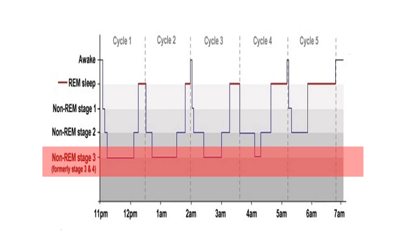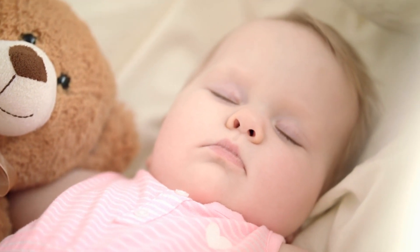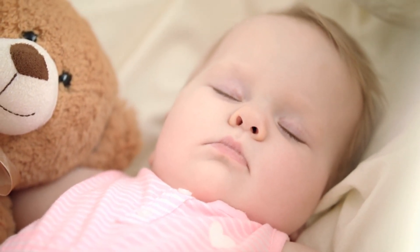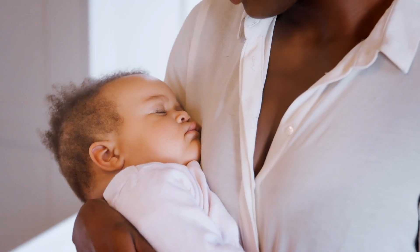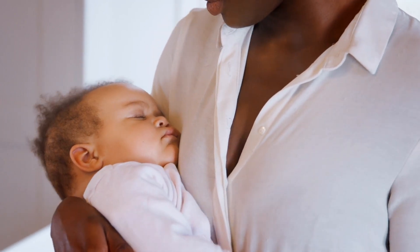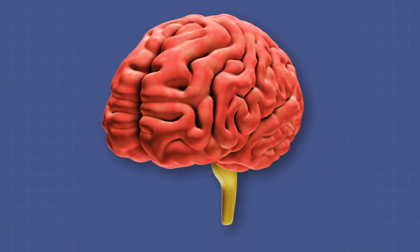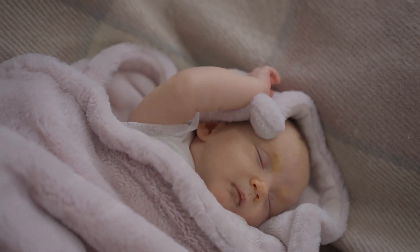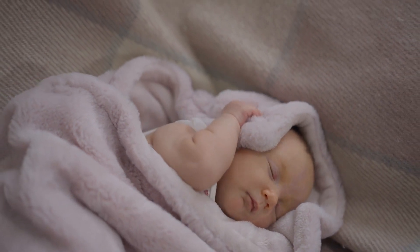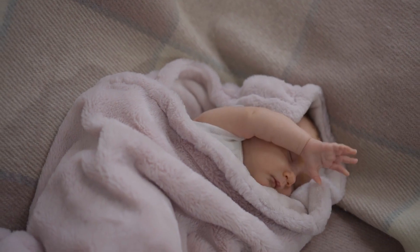The next stage of sleep is N3 or slow wave sleep. This is our deepest stage of sleep, which also makes it the hardest to wake someone from. In this stage, there is even more slowing down to a delta frequency that tends to have very big waveforms, especially in the front of the brain or frontal lobe. We tend to have our biggest chunk of time in slow wave sleep in the beginning of the night, and that progressively decreases over the course of the night.